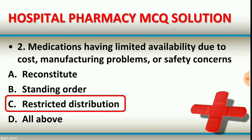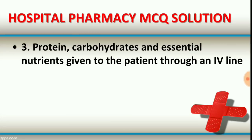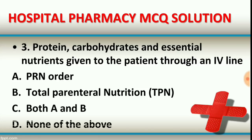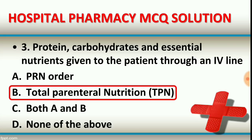Question number three: proteins, carbohydrates, and essential nutrients given to the patient through an IV line. Options: PRN order, total parenteral nutrition (TPN), both A and B, or none of the above. The right answer is option B, total parenteral nutrition. It is called total parenteral nutrition.